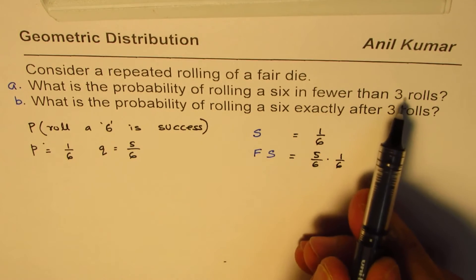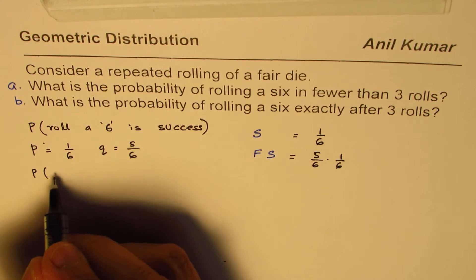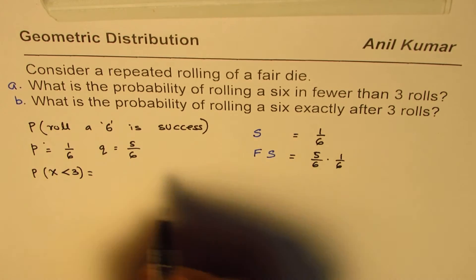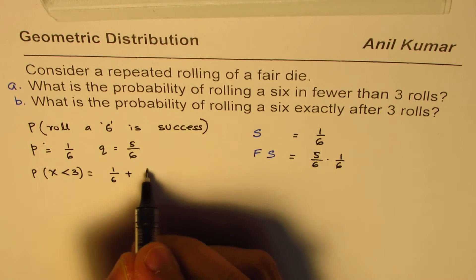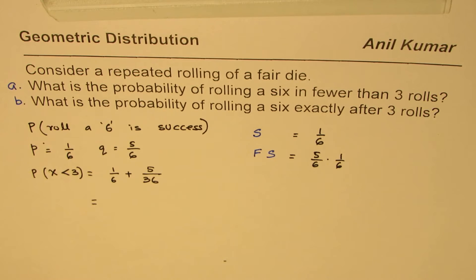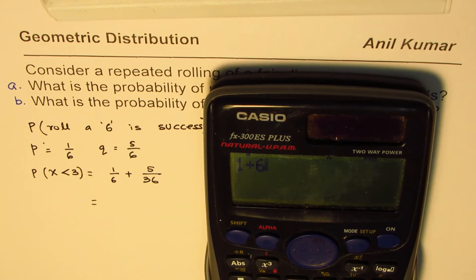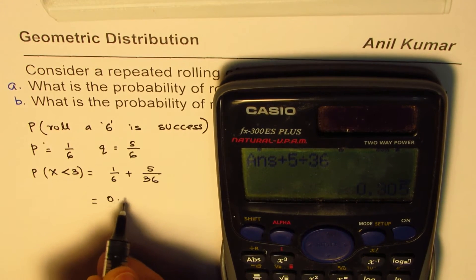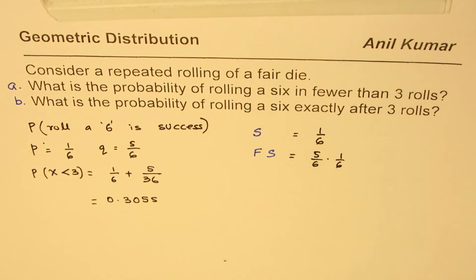What is the probability of rolling six in fewer than three rolls? The probability of success in less than three is equal to the sum of these two, which is one over six plus five over 36. We can now calculate this value: one divided by six plus five divided by 36, which equals 11 over 36, and that equals 0.305.